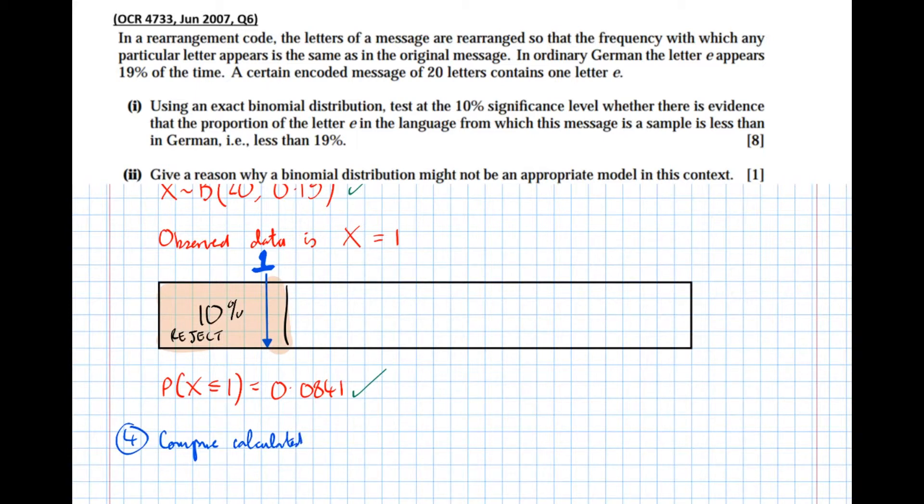That's this value here, this is our p-value to the significance level. So again this is worth the mark so I'm going to do it in red. So we've got 0.0841 is less than 0.1, that means it should lie in the rejection region or rather it does lie in the rejection region. Tick, it's worth a mark.